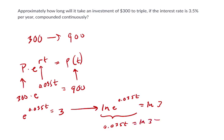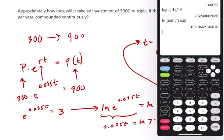So now we want to solve for T by dividing both sides by 0.035. Now, let's solve this.